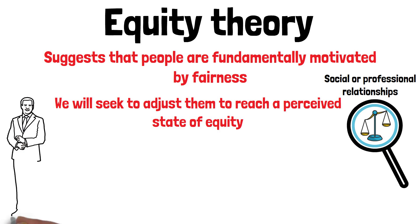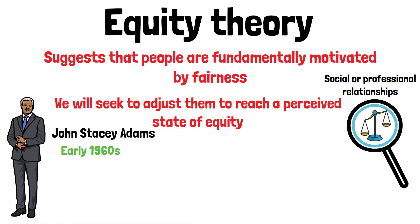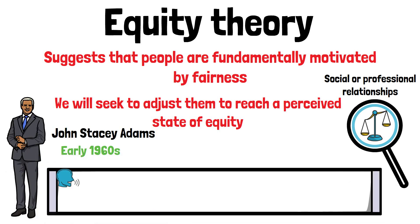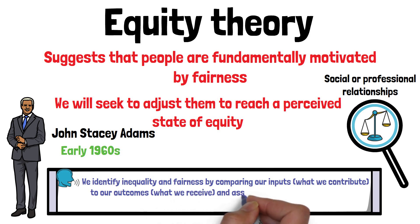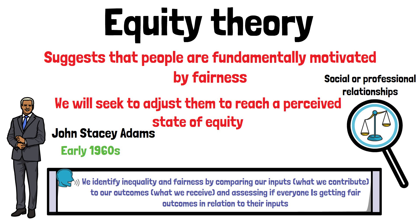The theory was developed by John Stacey Adams in the early 1960s. According to this theory, we identify inequality and fairness by comparing our inputs, what we contribute, to our outcomes, what we receive, and assessing if everyone is getting fair outcomes in relation to their inputs.